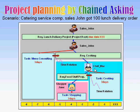Then Chef Mac accepted this request and created his cooking task with three days' duration, and issued a food staff shopping request to Shopper Jen, setting a time relation from the shopping request to the cooking task. Finally, Shopper Jen accepted this request and created her shopping task. By this way, we can develop a whole work plan and schedule by chained asking procedures.